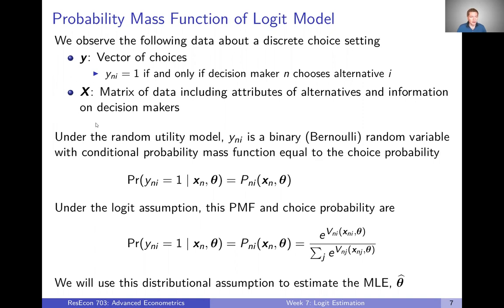We also observe a matrix of data, capital X, that includes attributes about the alternatives and maybe some information on decision makers as well. In order to use maximum likelihood estimation, we need to make an assumption about how these y variables are distributed — really how they're distributed conditional on the x's.